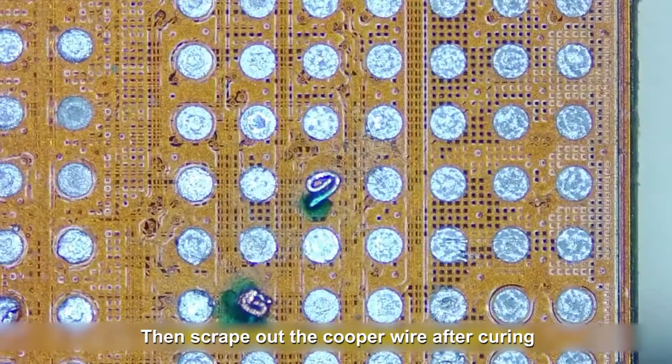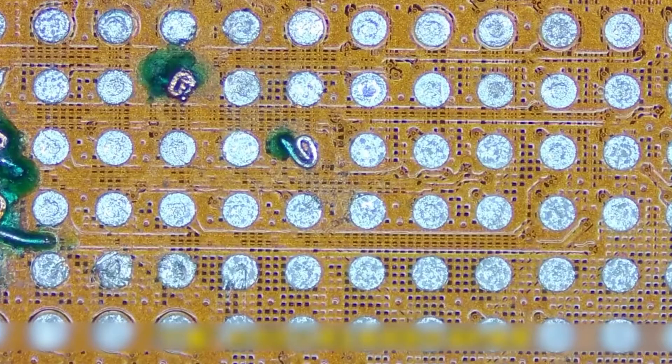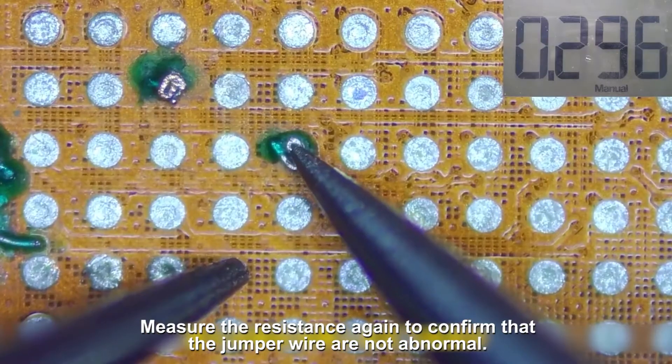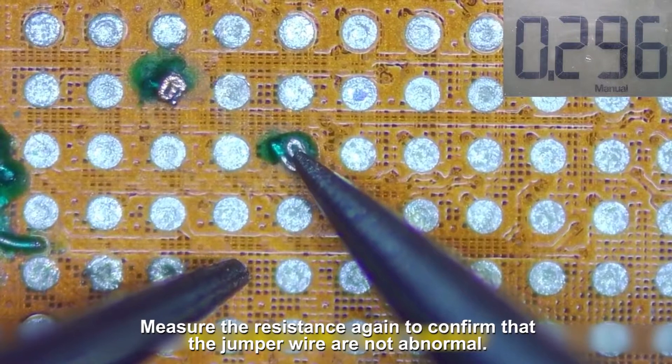Then scrape out the copper wire after curing. Measure the resistance again to confirm that the jumper wires are not abnormal.